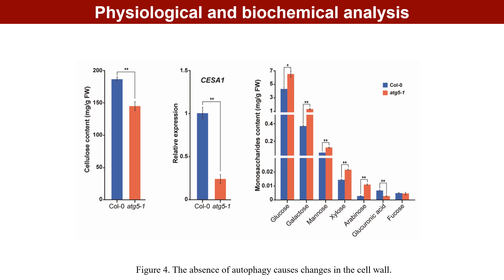Based on the changes in cell wall-related proteins, we conducted relevant physiological and biochemical analyses. Consistent with the altered plant-microbe interactions, autophagy mutant ATG5-1 exhibits altered features, including decreased cellulose content in roots and accumulation of monosaccharide components in cell walls.